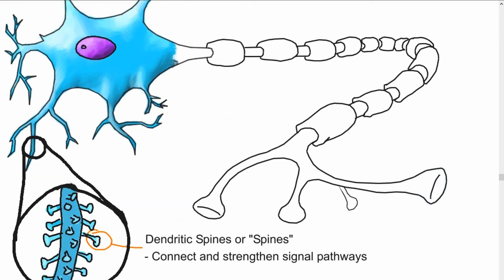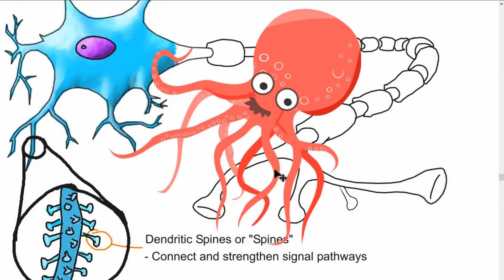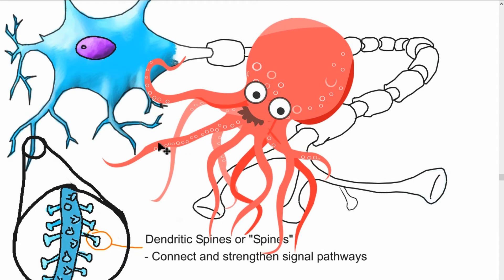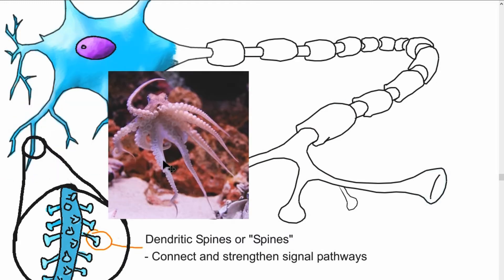You can kind of imagine the soma and dendrites of a neuron as that of an octopus, like our friend Octavio here. The tentacles are like the dendrites of a neuron and the head is like the soma. As we see Octavio swimming in the water, all the suction cups underneath are like the spines. The more suction cups Octavio uses, the better he's able to stick and grab onto food. Or as with neurons, more spines can mean more ways to connect and strengthen signal pathways.